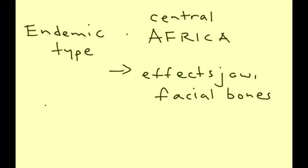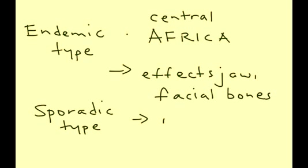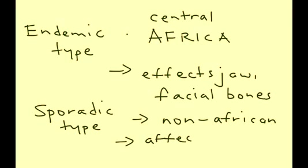The next type is known as the sporadic type, and it occurs outside of Africa, which is why it's sometimes referred to as the non-African type. This type of Burkitt's affects the abdomen, and in particular the ileocecal region.